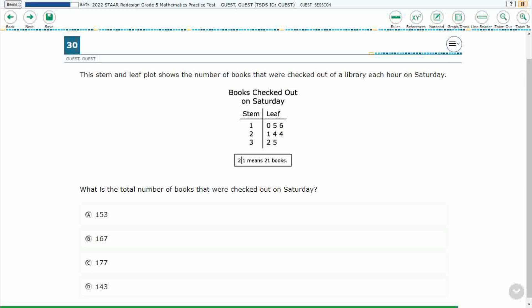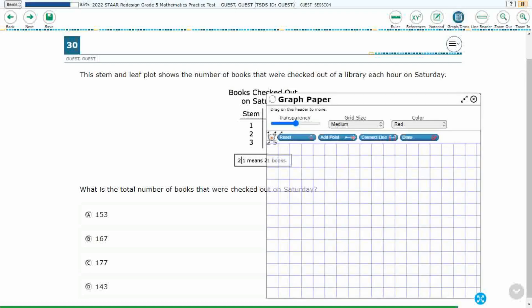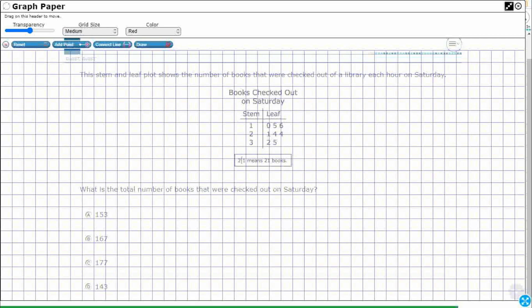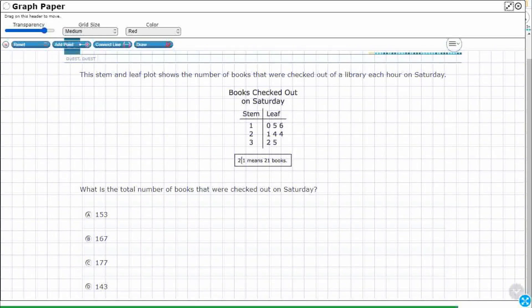So we have a stem and leaf plot showing the number of books checked out of a library each hour on Saturday and the total number of books that were checked out on Saturday. So we've got to do something with this data here. Let's open up our graph draw feature, increase the transparency here so we can see what's going on behind there. So always first check this key right here. The 2 slash 1 means 21. That's typically how these go. So really what we're looking at is place value. The stem is going to be like the tens place and this is going to be like the ones place.